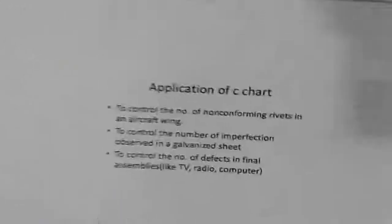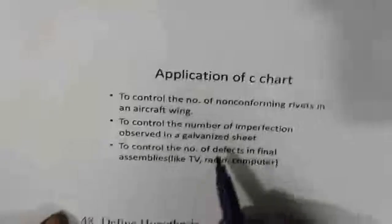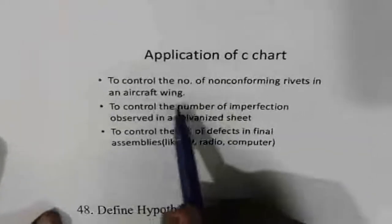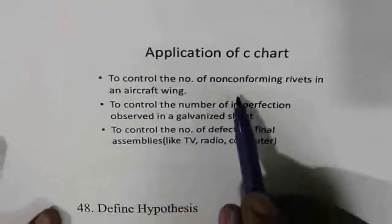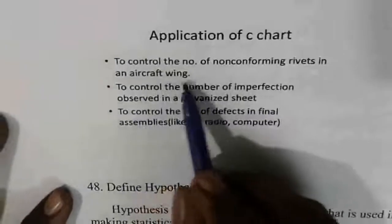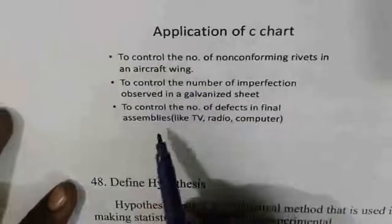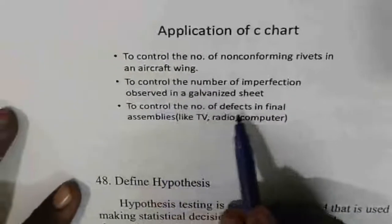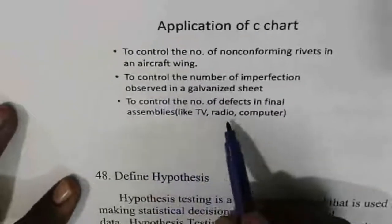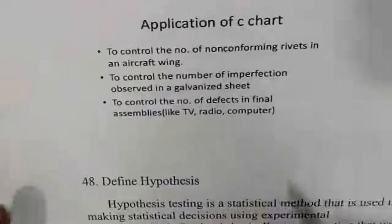Uses of C chart (statistical control chart): to control the number of non-conforming defects in aircraft wings, and to control the number of defects in final assemblies like TVs, radios, and computers.